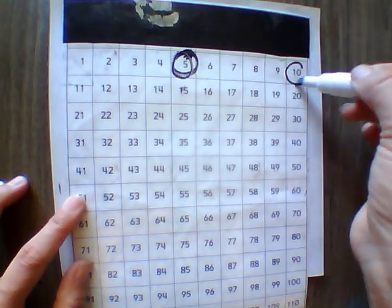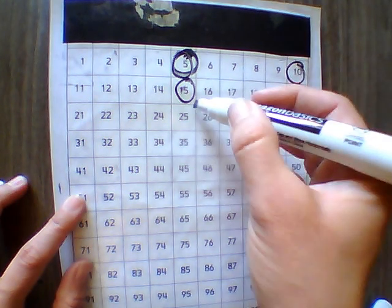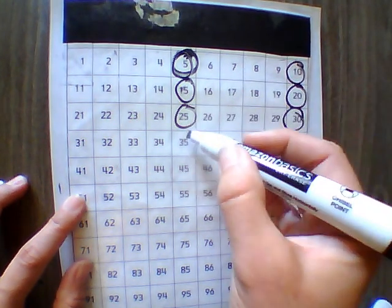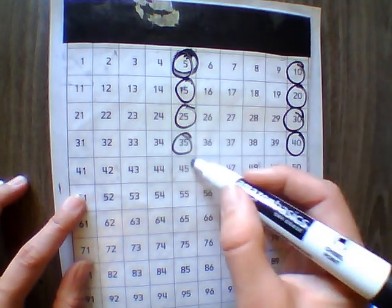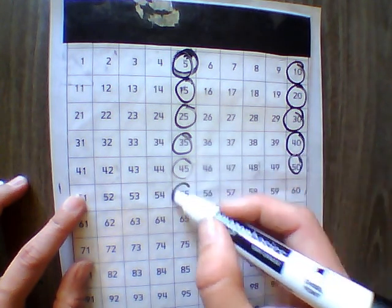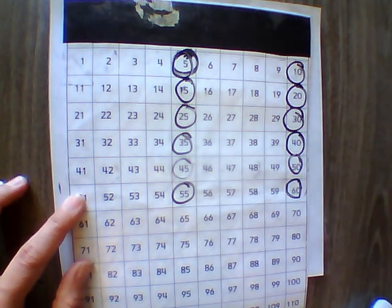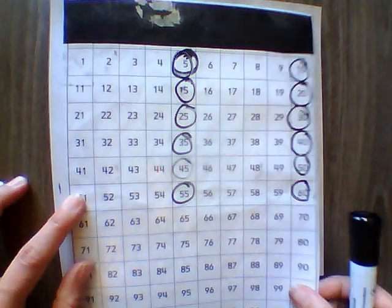Five, 10, 15, 20, 25, 30, 35, 40, 45, 50, 55, 60. And we'll stop there with our counting by fives.